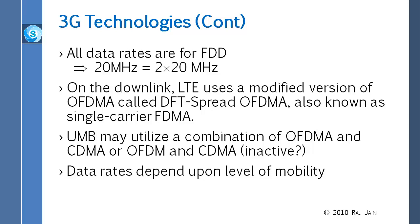In LTE they use a special form of OFDMA called DFT-spread OFDMA, also known as single-carrier OFDMA, which will be discussed in more detail later. UMB appears on the diagram but has gone inactive — Wikipedia says it was abandoned, and no implementation has been announced in the past year. There is specification data on the 3GPP2 website from 2009, but nobody seems to be implementing it, so it remains an active question mark.